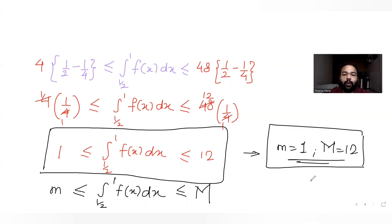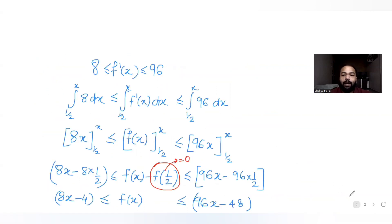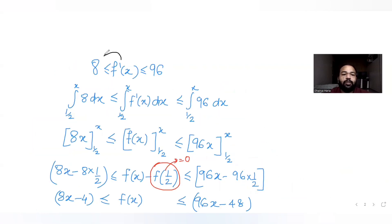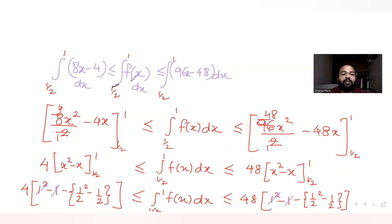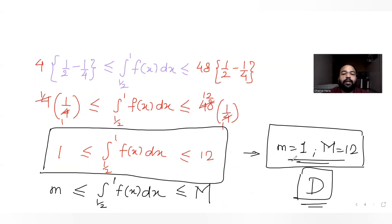The option that matches is D, so D is the correct answer. To summarize: we took the limits of x, substituted to get limits of f'(x) at x = 1/2 and x = 1, integrated from 1/2 to x to get bounds on f(x), then integrated again from 1/2 to 1 to get m = 1 and M = 12. We will continue with the JEE Advanced series tomorrow.